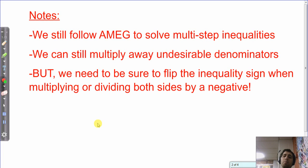Two, we can still multiply away undesirable denominators. So, if you have a denominator that you don't like, just multiply both sides by that number. We're undoing the division that the denominator signifies by multiplying. Just make sure that you distribute. If we're trying to undo division by four on a whole side, we need to multiply both sides entirely by four. And if you multiply a whole side by four, you need to make sure each term gets multiplied by four.